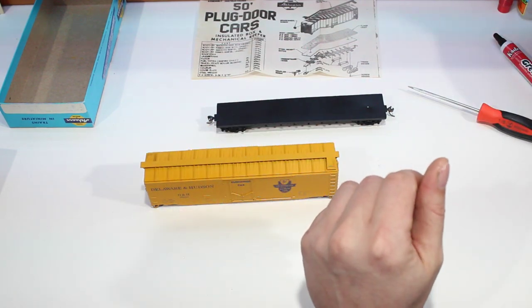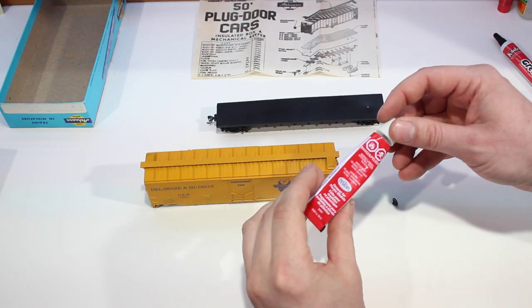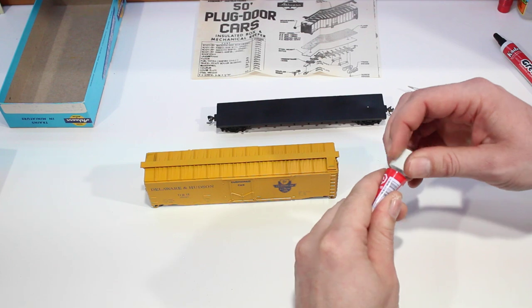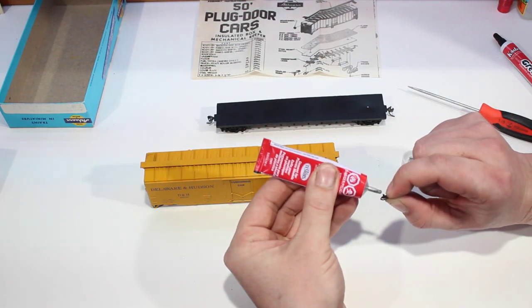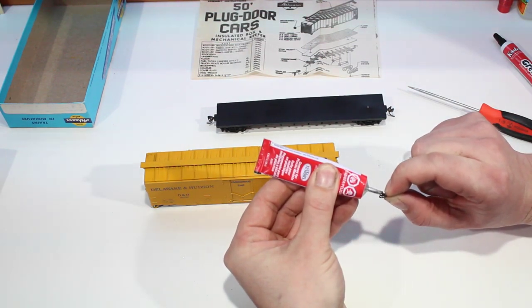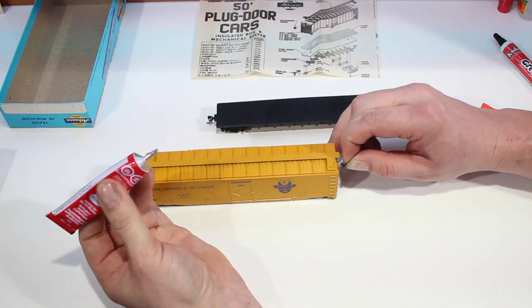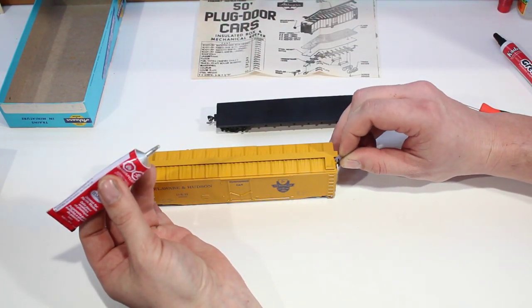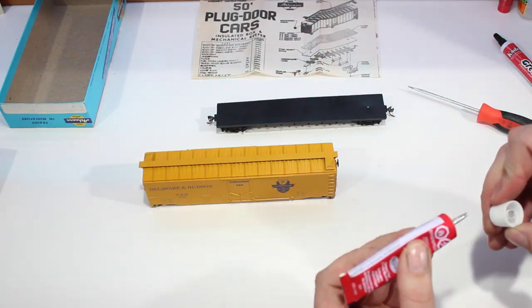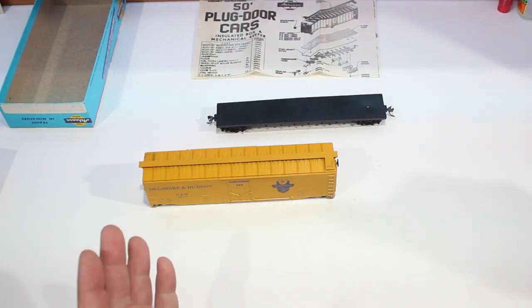We are actually going to need a little bit of glue on there, so we're going to use Testors plastic cement. Just put a little dab on the end like so, carefully stick it in there, not to get glue all over the place, and then just let it dry.